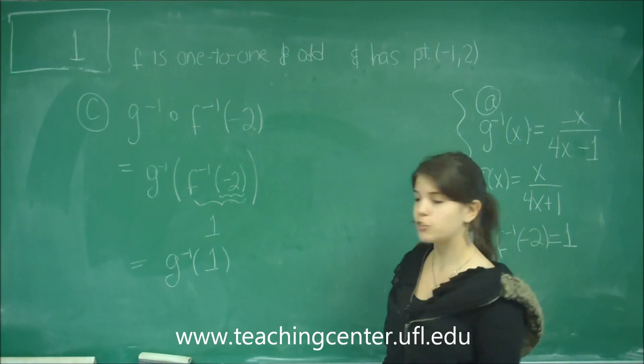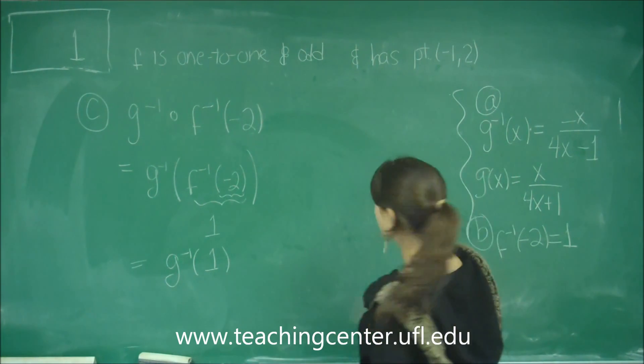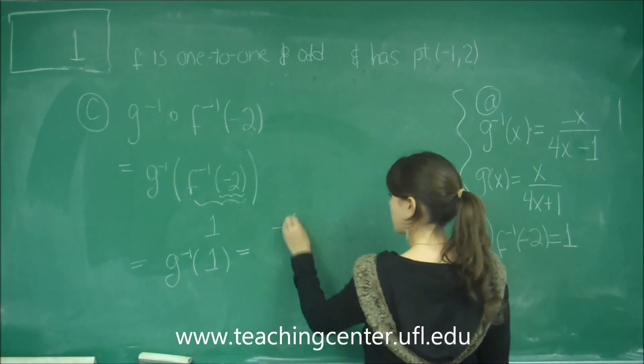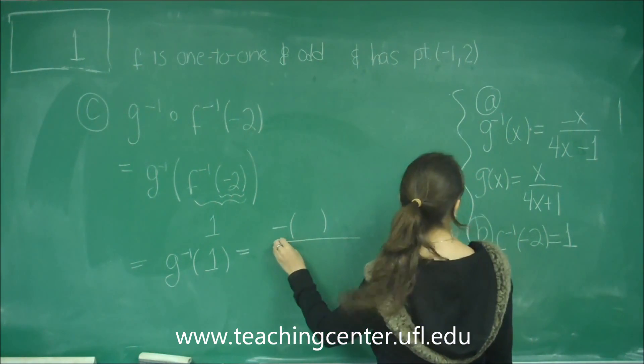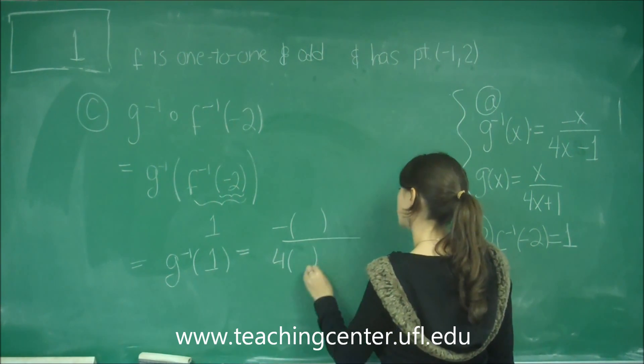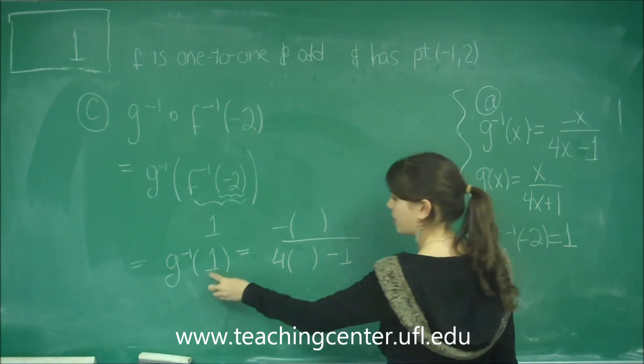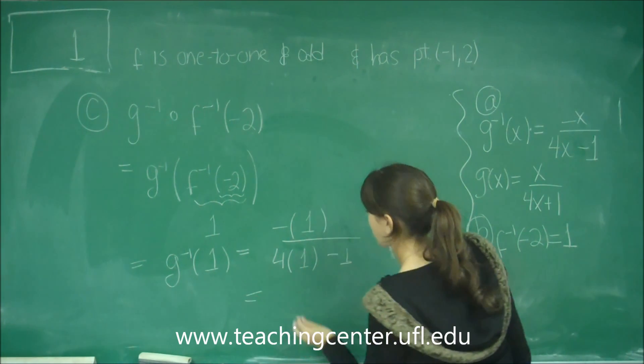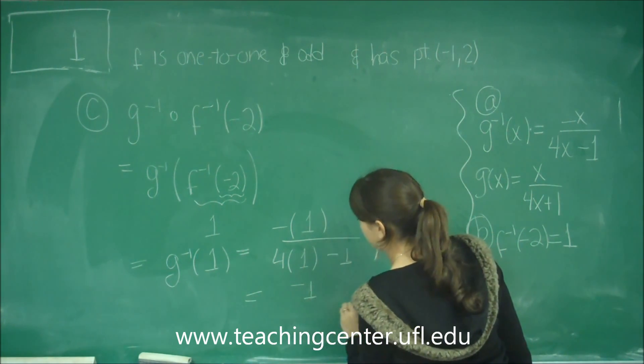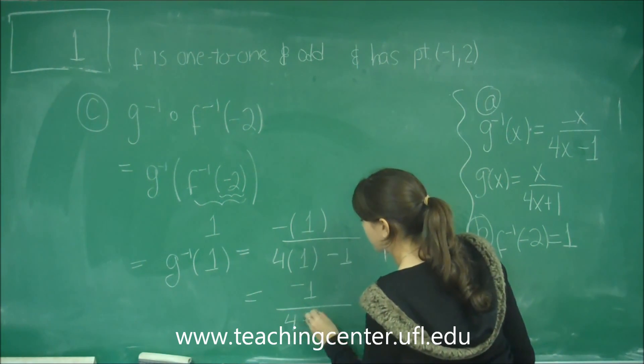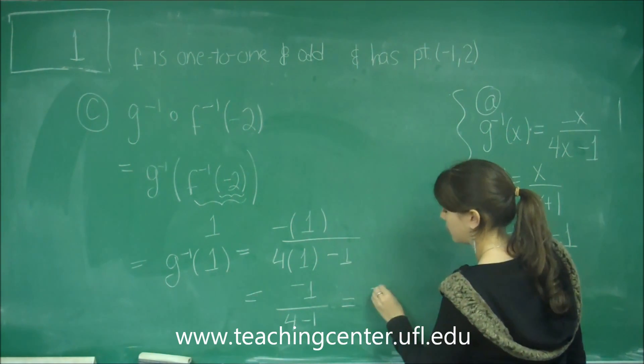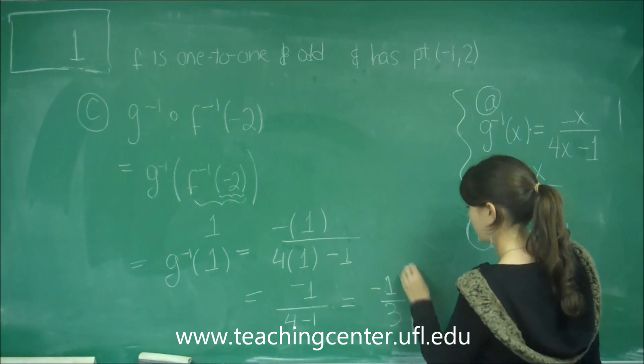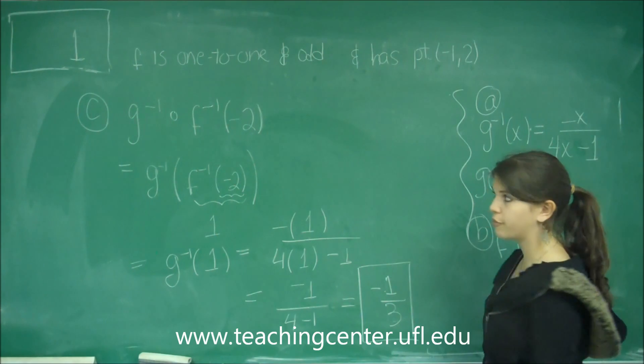And now from here it's just a matter of plugging this x value into the g inverse that we've already found. So I'm going to go ahead and put parentheses everywhere I see an x. And now I'm going to plug in the 1. And now it's just algebra. I get -1 over 4 minus 1, which gives me -1 over 3. And that's my answer for part c.